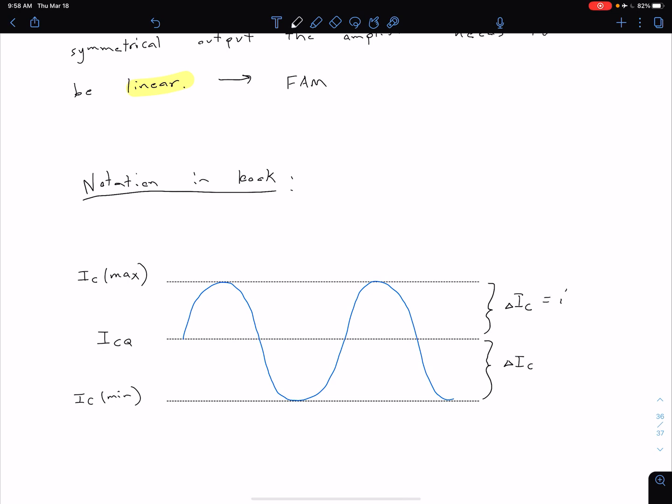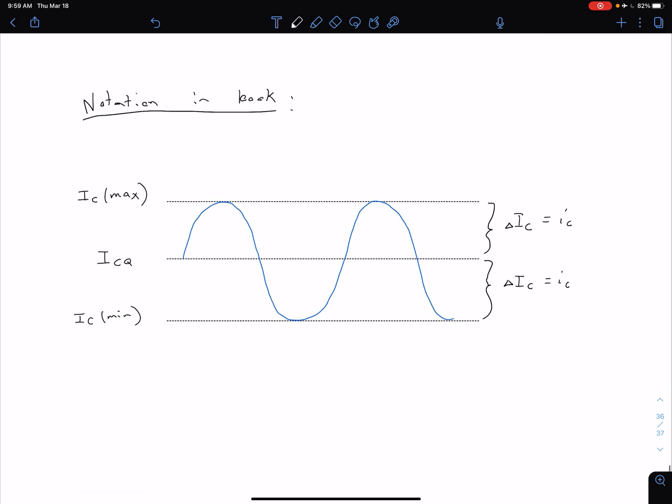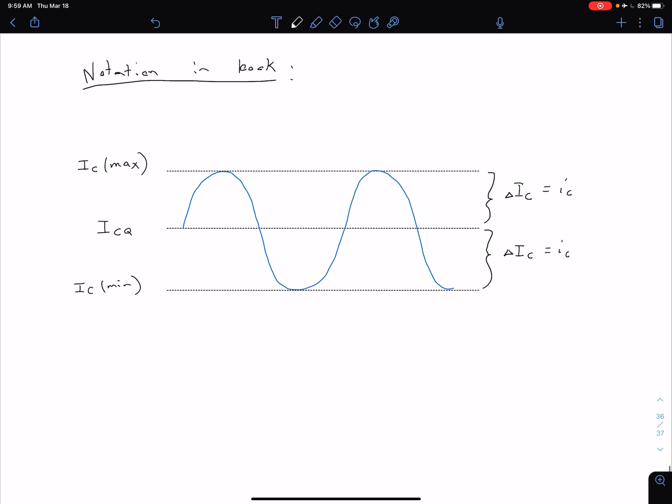In other places they also call this lowercase IC. That's where it can be a little bit confusing, but as long as you follow this basic concept of the maximum symmetrical swing being this whole change between our max and min, you should be able to recognize what the notation is referring to. Our maximum symmetrical swing is going to be equal to two times that delta IC.